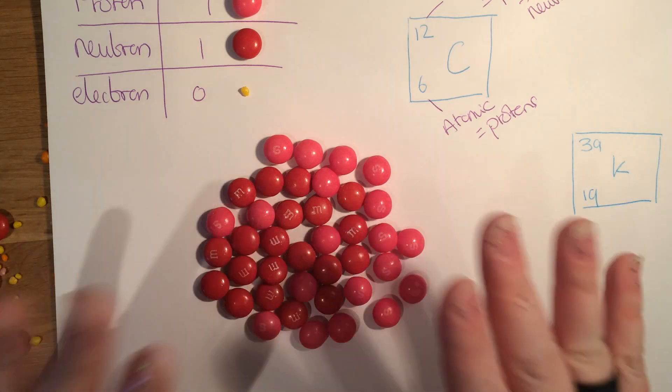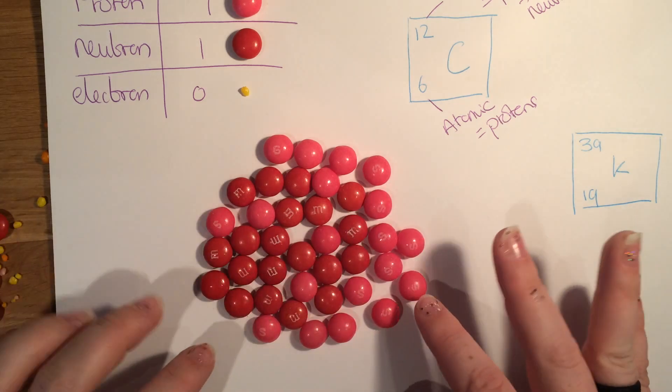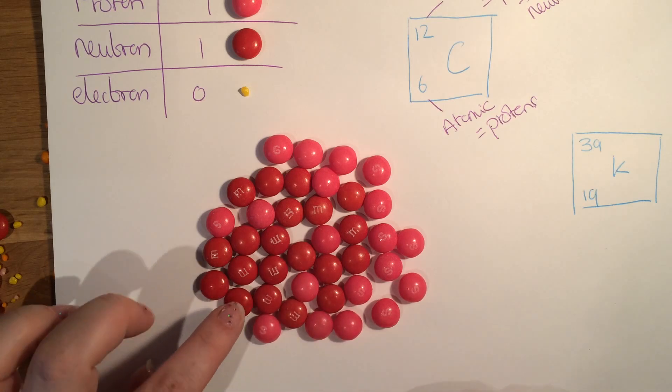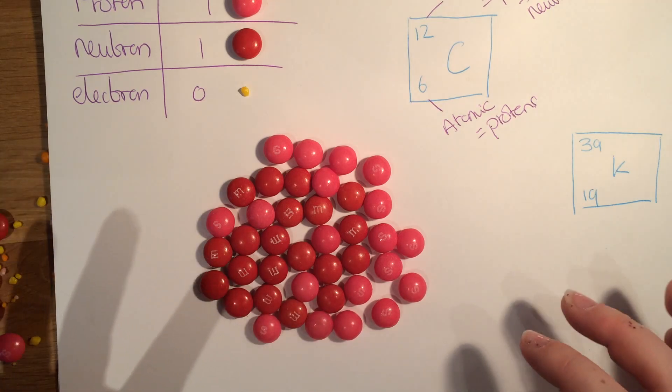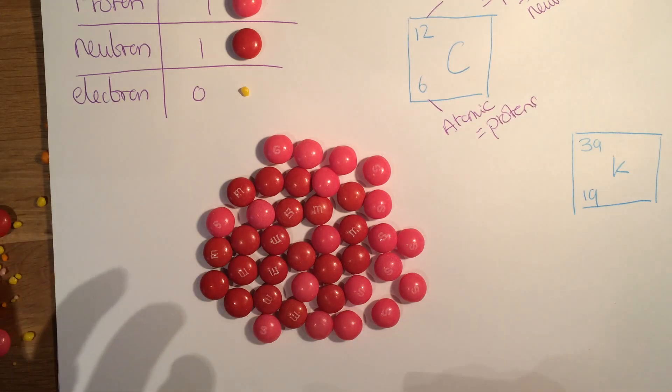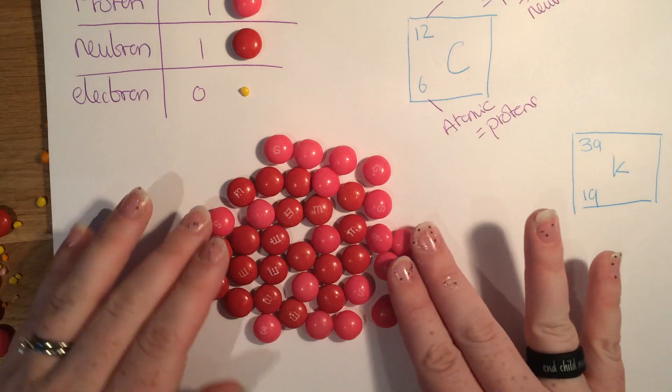So that's what the nucleus of a potassium atom looks like. It has 19 skittles in there, the pink ones, and then 20 M&Ms. For more explanation on how I worked out the number of M&Ms that were needed, go and check out my other video I've already done on this. I'll probably link to it for you.